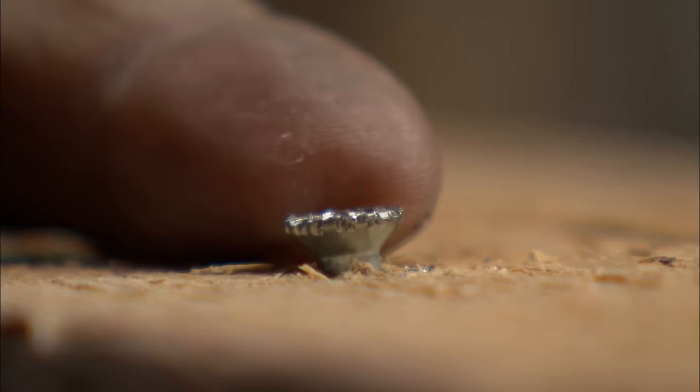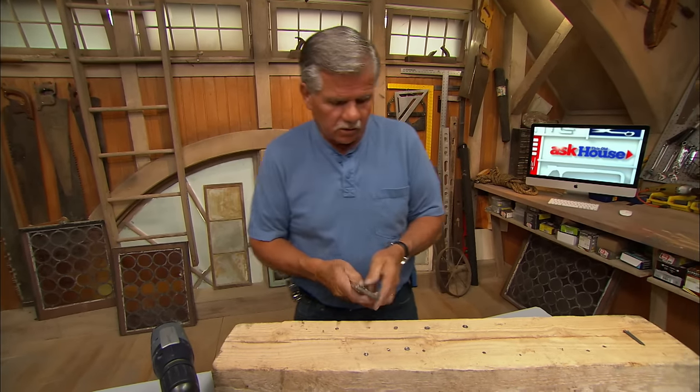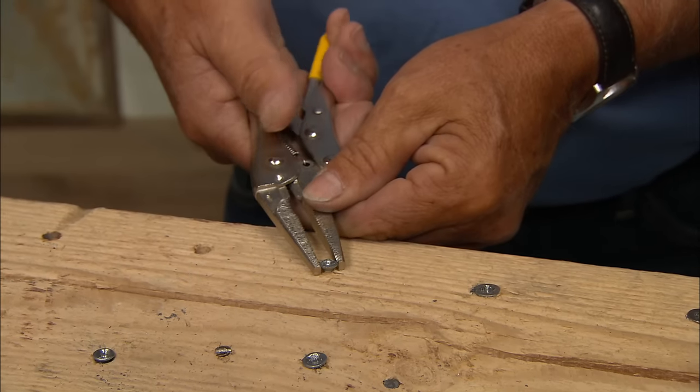But if that doesn't work and the head of the screw is sticking up just a little bit above the surface, I can take my locking pliers, grip it on the edge of the screw and turn it out.